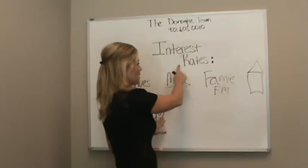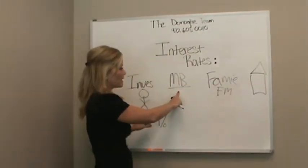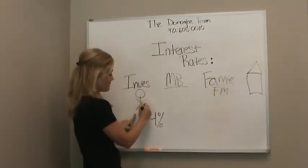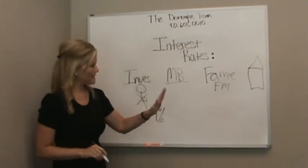Fannie Mae and Freddie Mac get their money by these mortgage-backed securities that come from the pockets of these wealthy investors, and that's how it works.